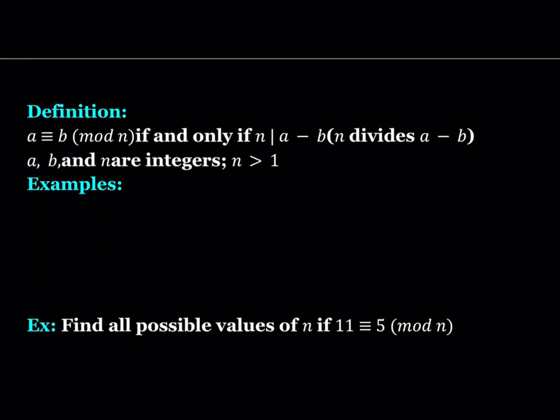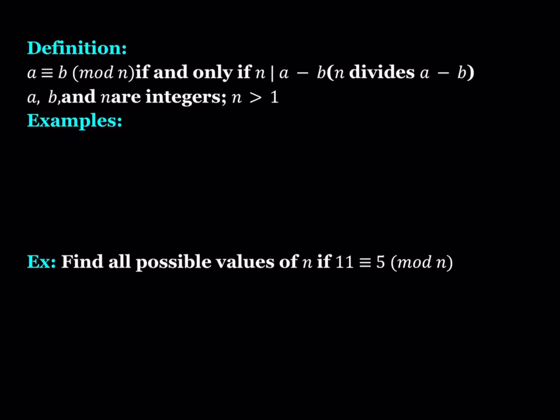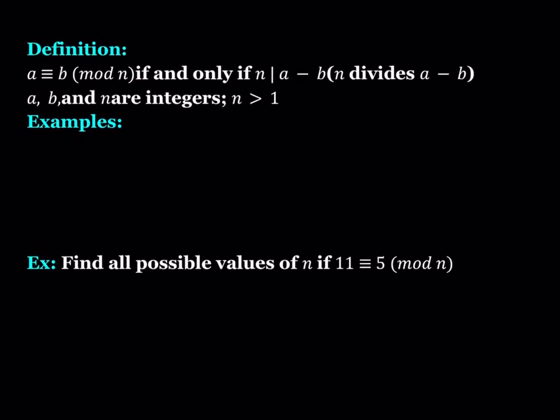Now let's look at a more formal definition of modular arithmetic — a congruence statement. So a is congruent to b mod n if and only if n divides a minus b. In this case a, b, and n are integers and n needs to be greater than 1.